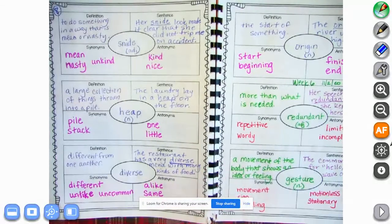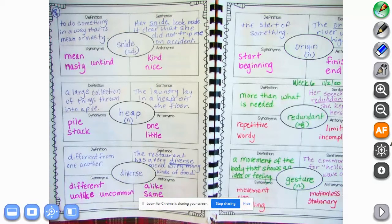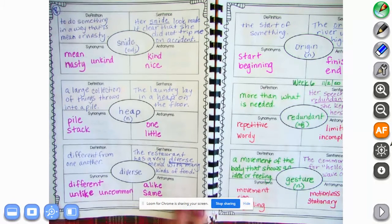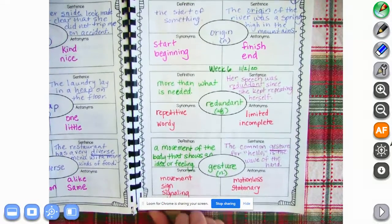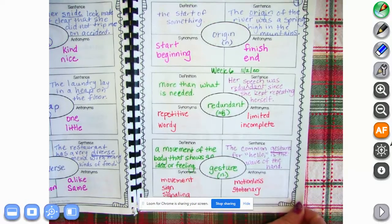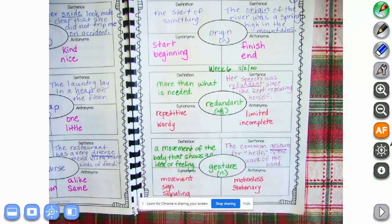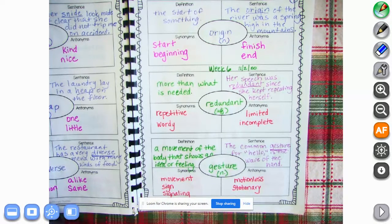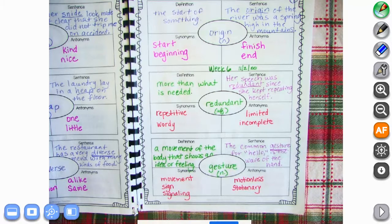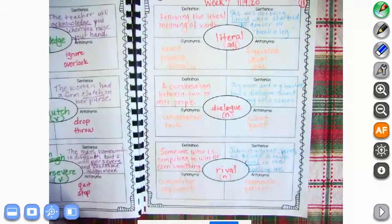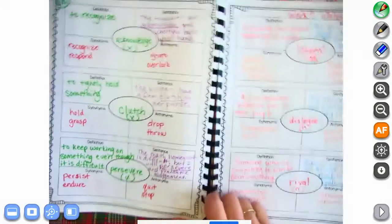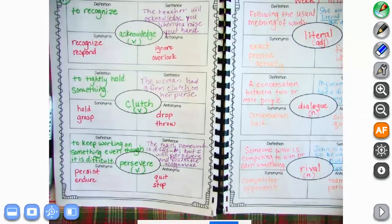I'm going to turn to the next one. We have on page eight: snide, heap, and diverse. Go ahead and push pause to get that written down. We're going to slide over here to origin, redundant, and gesture, page nine. Go ahead and press pause if you need anything on this page. All right, on page 10 we have acknowledge, clutch, and persevere.